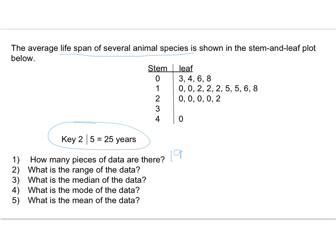Notice that there is nothing in the 3. That just means that there wasn't any species that lived into their 30s, but we don't want to skip a 3. We want to be consistent in how we count.